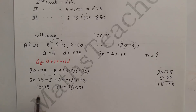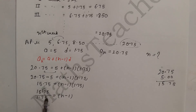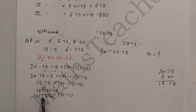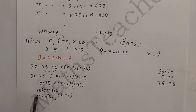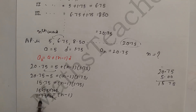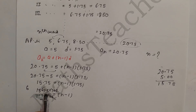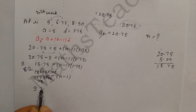Transferring 1.75 to multiply: 15.75 ÷ 1.75 = n - 1. To solve this decimal division, multiply numerator and denominator by 100, giving 1575 ÷ 175 = n - 1. Simplifying using the 25 times table, 175 goes into 1575 nine times, so 9 = n - 1, therefore n = 10.